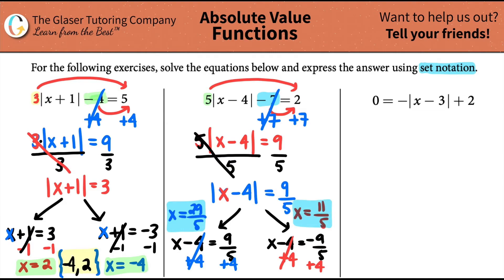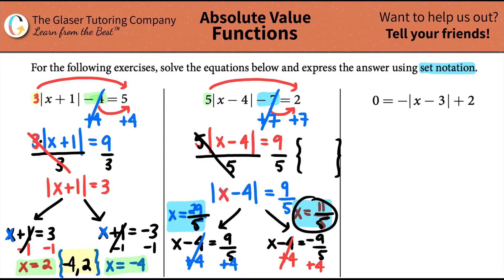We just have to put the answers into set notation. Squiggles — which one is the smaller number? They're both over the same denominator, both over five, so you always look at the top number — the higher numerator is the bigger number. Between 29 and 11, 29 is bigger, so 29 over five is higher and 11 over five is lower. That means I start with 11 over five, comma, 29 over five. And that's it.